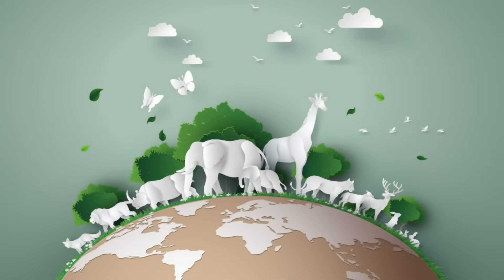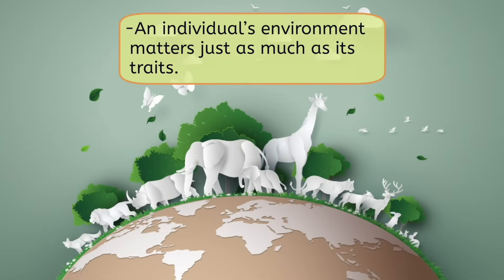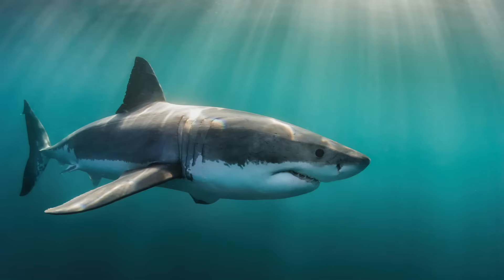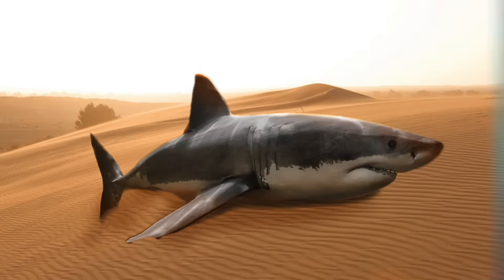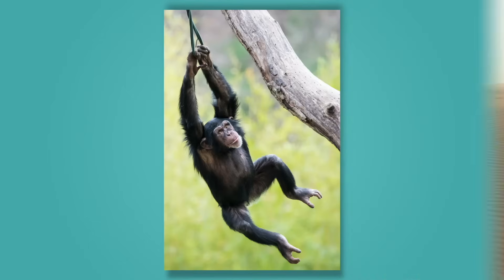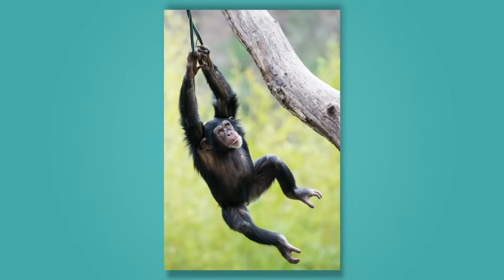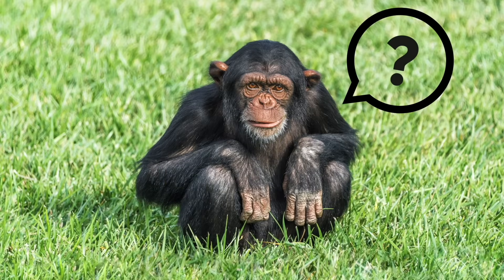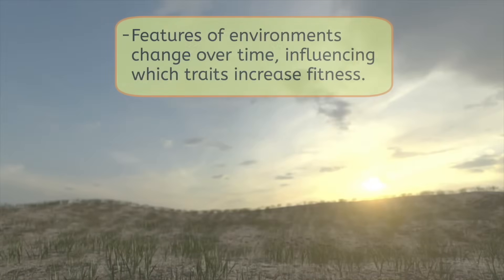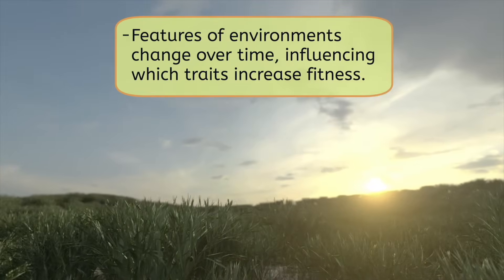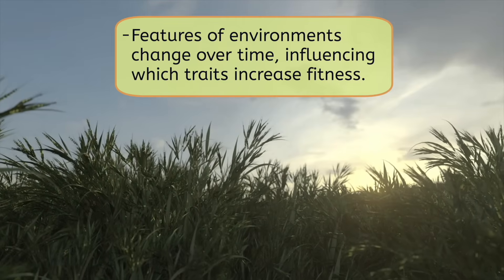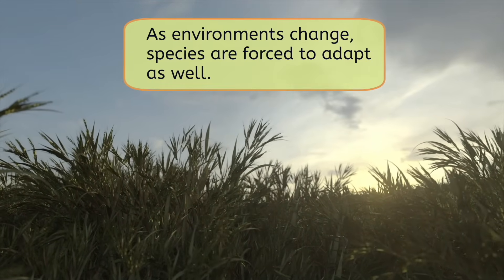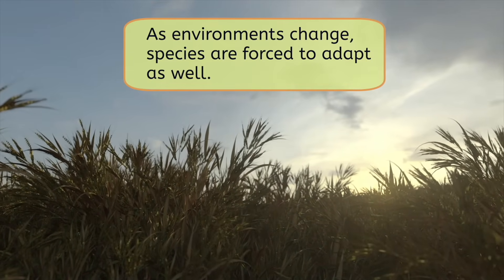It's also important to keep in mind that an individual's environment matters just as much as its traits. For example, a great white shark is incredibly fit to survive in the ocean, but it wouldn't last very long in a desert. And traits that are beneficial for climbing won't help much in a flat area. Additionally, the features of environments change over time, influencing which traits increase fitness. So as environments change, species are forced to adapt as well.